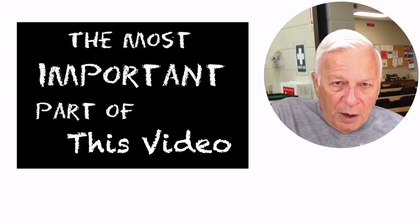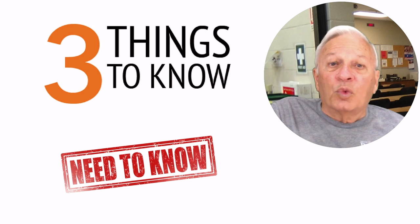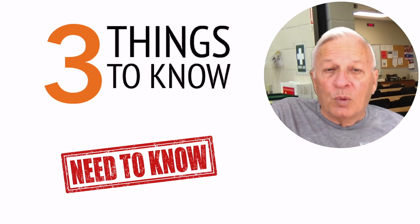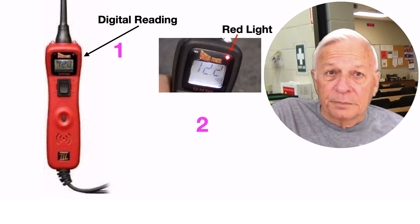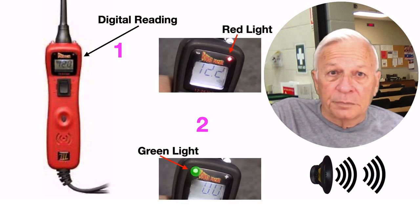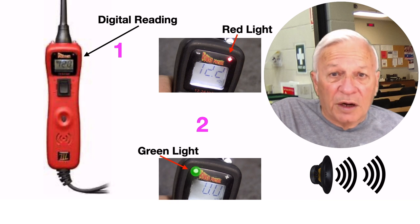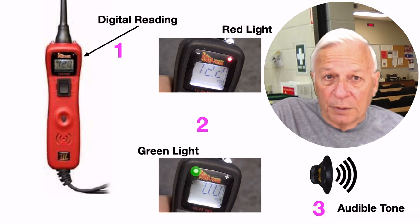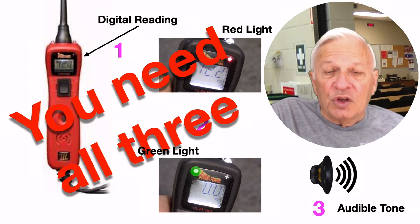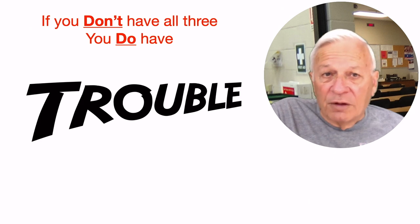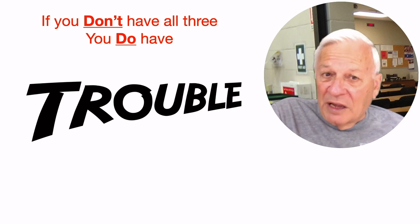Now let's talk about the most important part of this video. There are three things that you need to know if you want to use the tool properly. The digital reading, both the lights, red and green, and an audible tone. Now you need all three. Let me repeat that. You need all three. Learn to use all three. They are there for a reason. If you don't have all three, you do have trouble somewhere, and it's evidence that you can't ignore.